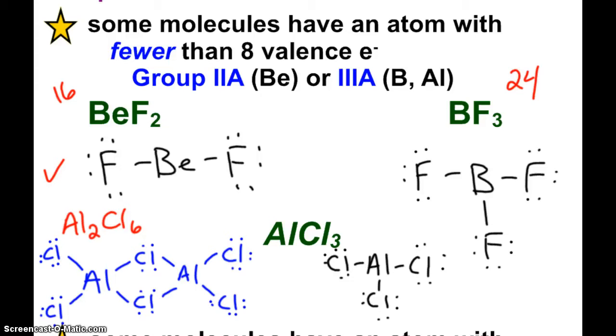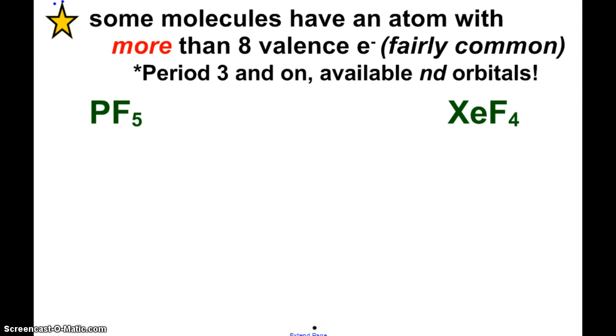Some molecules have an atom with more than 8 valence electrons. And this is fairly common. From period 3 on, we have lots of extra orbitals around, especially the d-orbitals. And there's that debate about what the true hybridization is. But the fact remains that we see a lot of these compounds that have exceptions where we see more than 8 valence electrons.